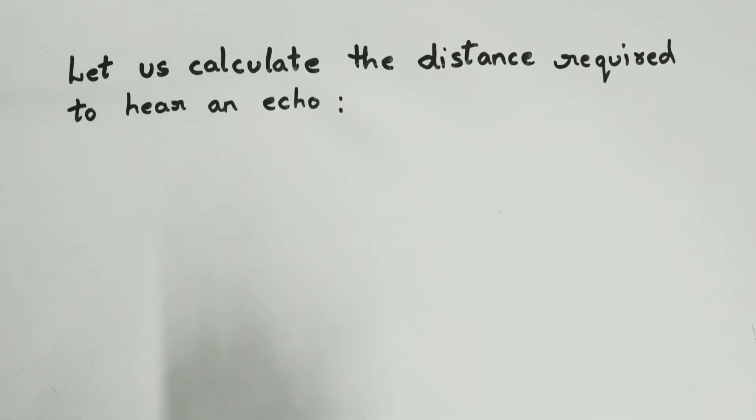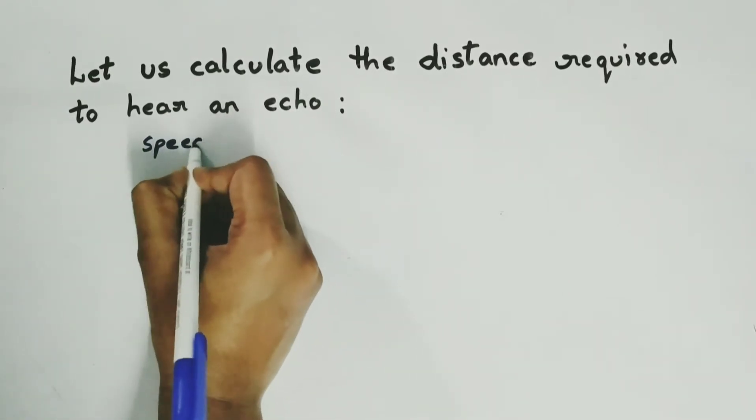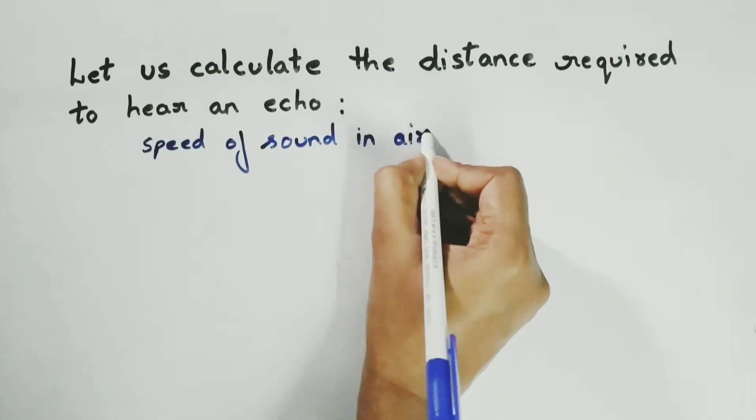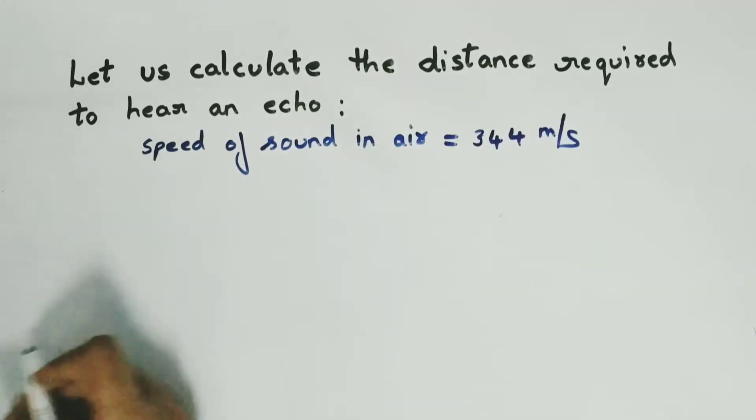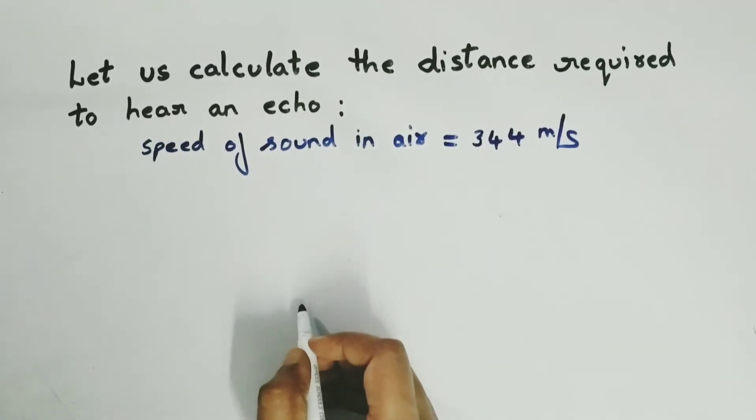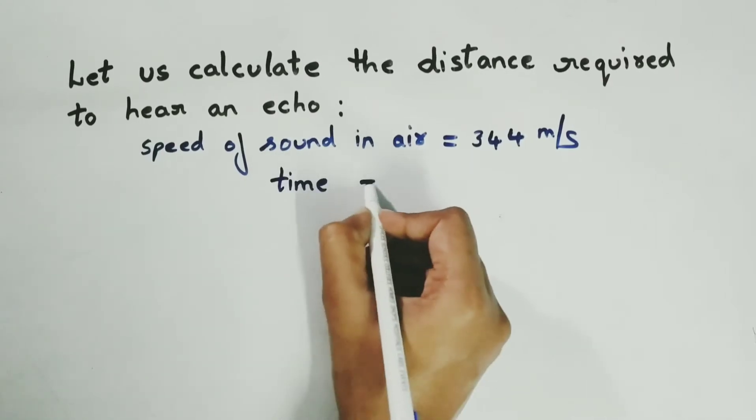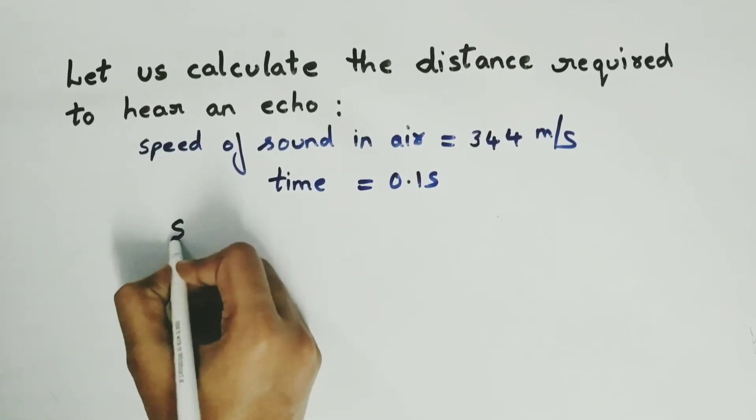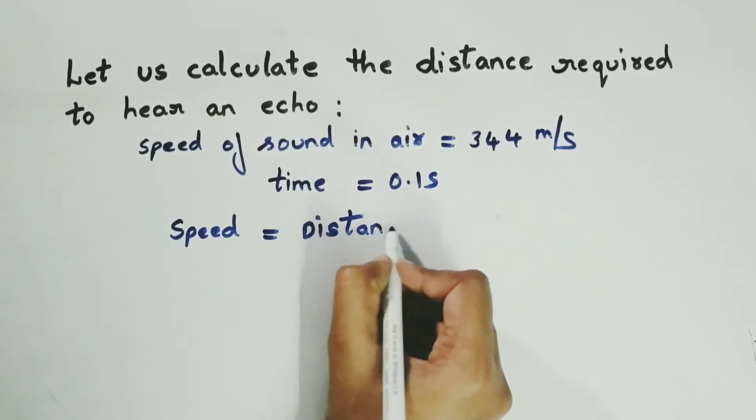So let us calculate the distance required to hear an echo. We know that speed of sound in air is equal to 344 meters per second and the time required to hear an echo should be at least 0.1 second. Let us take time equals 0.1 second and we already know the speed formula, that is speed equals distance by time.